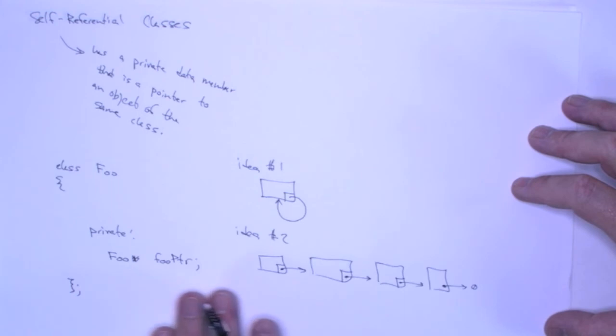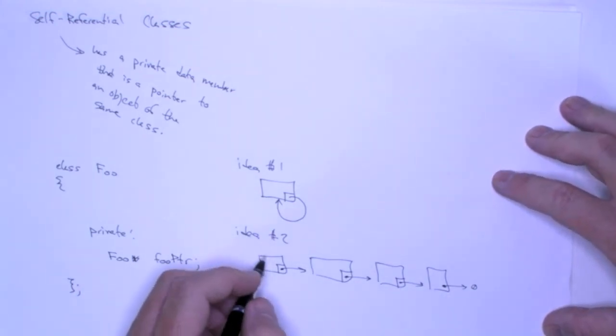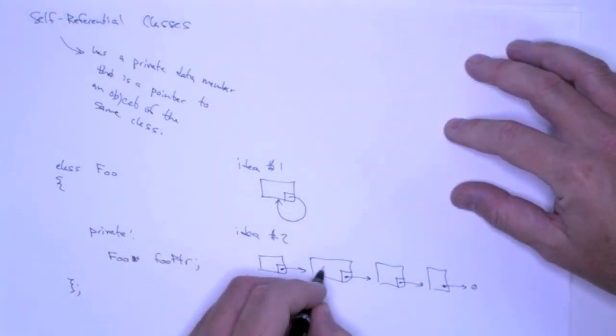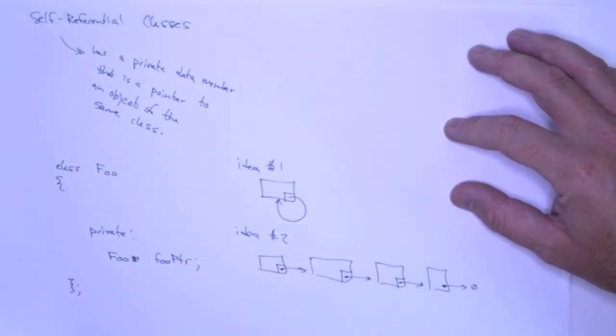Now, this is not very useful. I mean, just creating these chains, usually what we want to do is we want to store something else in these objects. Well, what is that going to be? Well, it can be anything.